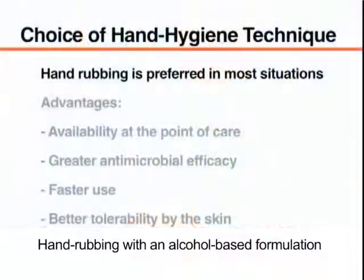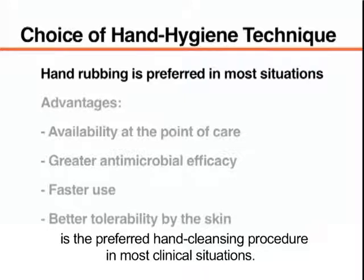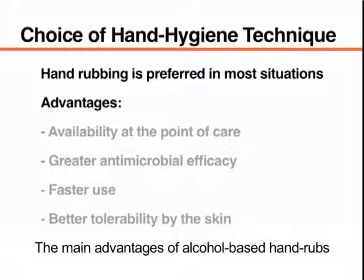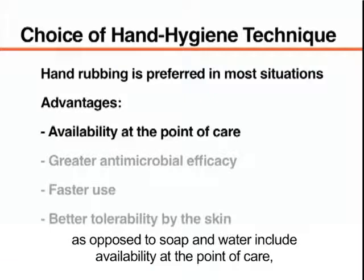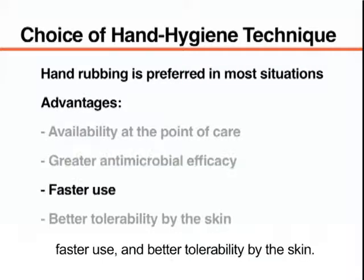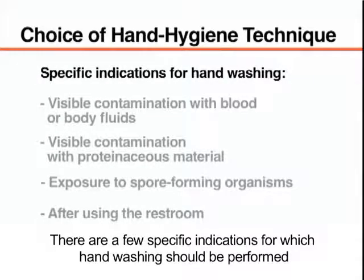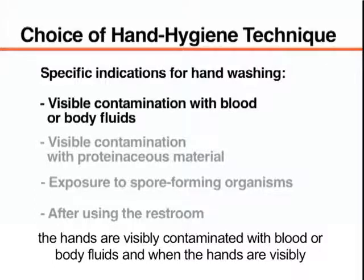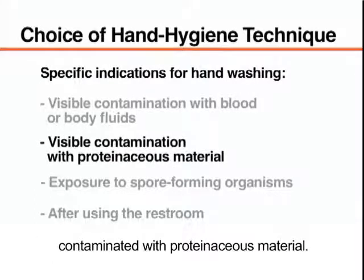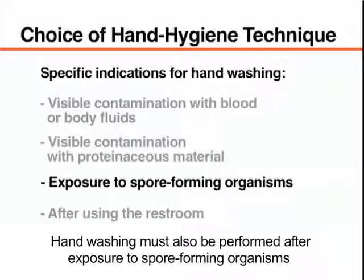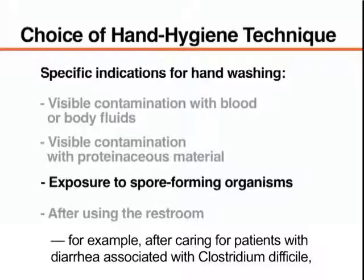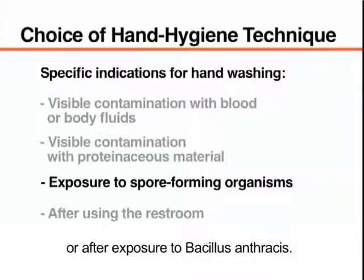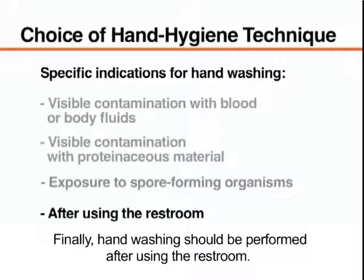Hand rubbing with an alcohol-based formulation is the preferred hand cleansing procedure in most clinical situations. The main advantages over soap and water include availability at the point of care, greater antimicrobial efficacy, faster use, and better tolerability by the skin. However, hand washing must be conducted when hands are visibly contaminated with blood, body fluids, or proteinaceous material; after exposure to spore-forming organisms such as Clostridium difficile or Bacillus anthracis; and after using the restroom.